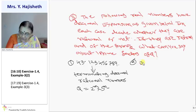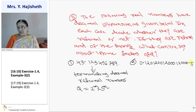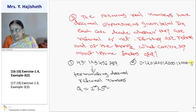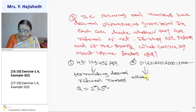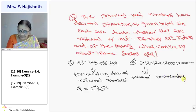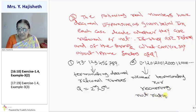Another sum: 0.120012000120000120... and so on — the pattern continues with increasingly many zeros. This is neither terminating nor recurring. Therefore this is a real number but not a rational number — it is irrational.